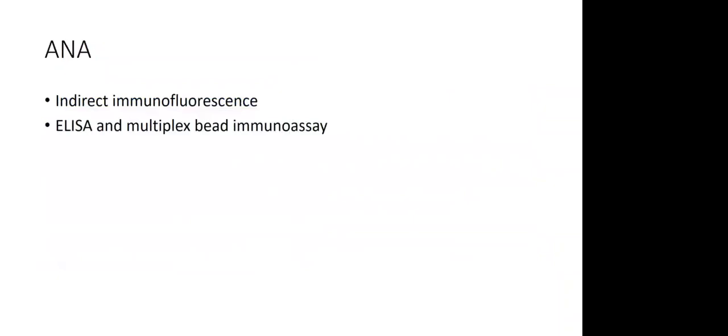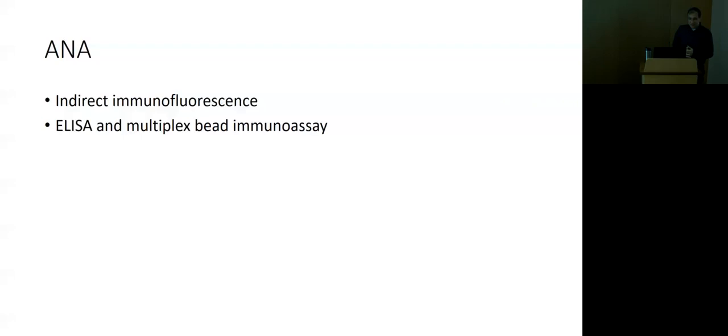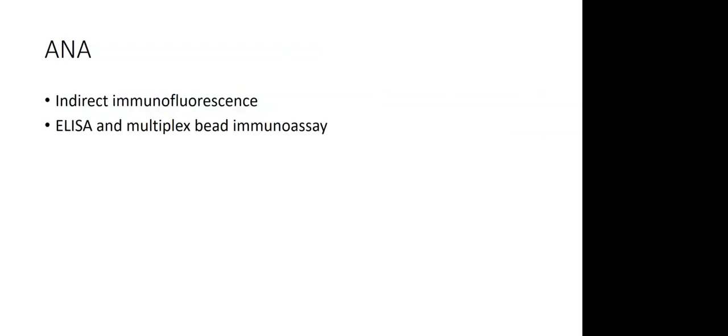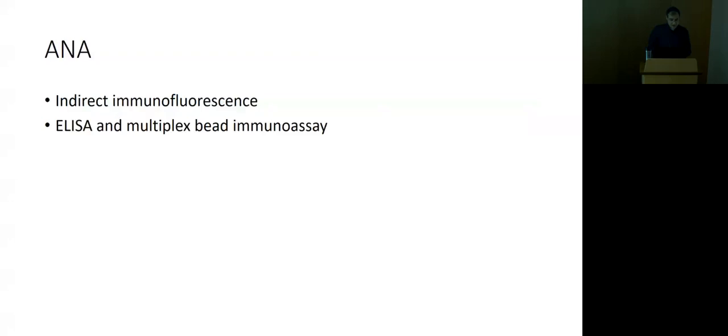Anti-nuclear antibodies: we get a lot of consults to explain a positive ANA ordered by other providers. There are two types of tests. The gold standard is indirect immunofluorescence — also called fluorescent ANA — which is a very good test. There is also ELISA, which is much less reliable. ELISA checks for only eight to ten nuclear antigens, is less sensitive than fluorescent ANA, frequently gives false positive results because the antigens used can change structure, but it is cheaper and less elaborate.